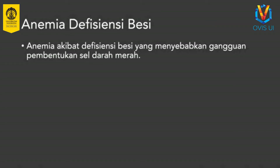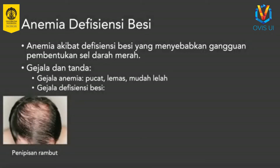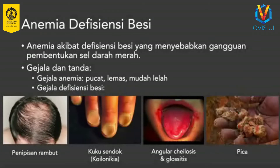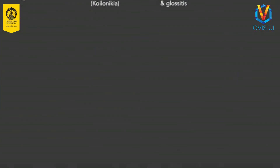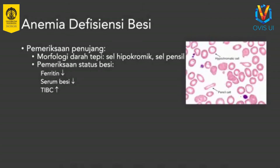Anemia defisiensi besi adalah anemia akibat kurangnya kadar besi dalam tubuh sehingga terjadi gangguan produksi sel darah merah. Anemia ini disertai dengan berbagai gejala dan tanda, seperti rambut menipis, kuku seperti sendok atau koilonichia, luka pada tepi mulut atau angular keilosis, peradangan lidah atau glossitis, dan pika atau keinginan makan benda bukan makanan seperti tanah. Hasil pemeriksaan morfologi darah tepi pada anemia defisiensi besi akan menunjukkan gambaran sel mikrositik hipokrom.